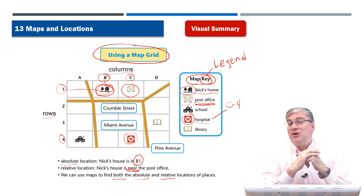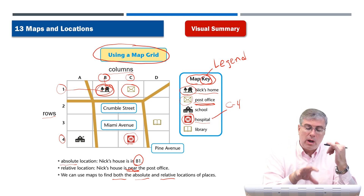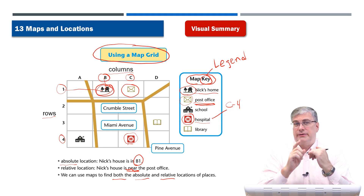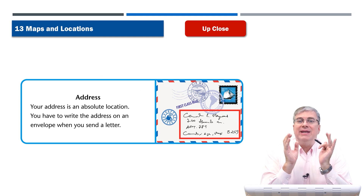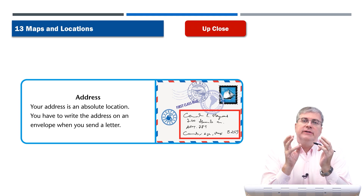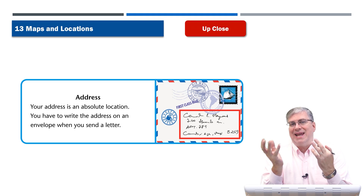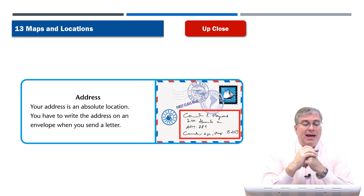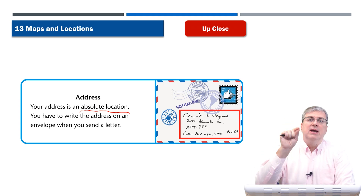Using maps to find both absolute and relative locations is very helpful when you're in a city going somewhere new. Of course, using a map grid is one way to find absolute location, but another way — one that doesn't use a map grid at all — is using an address. An address also tells you the absolute location of a place.